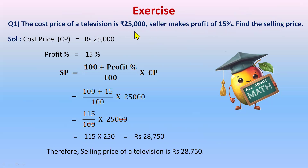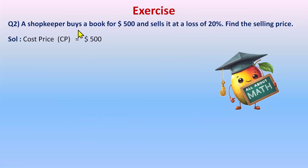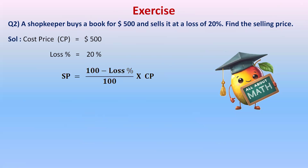Example 2: A shopkeeper buys a book for 500 dollars and sells it at a loss of 20 percent. Find the selling price. Here, loss percent is given, so we subtract in the numerator. Cost price = 500 dollars and loss percent = 20%. The formula: Selling Price = (100 - Loss%) / 100 × Cost Price.